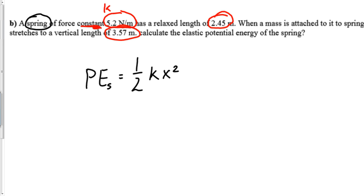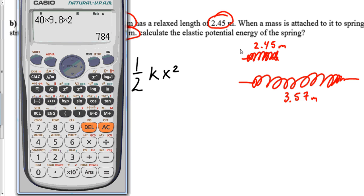The problem actually gives you two lengths for the spring. It says that the spring is initially 2.45 meters. And then it comes back and says somebody stretched the spring and now the spring is 3.57 meters. So the big question would be, what is X in the problem? You need to subtract them. Our difference is 1.12. So X in this problem is actually 1.12 meters.